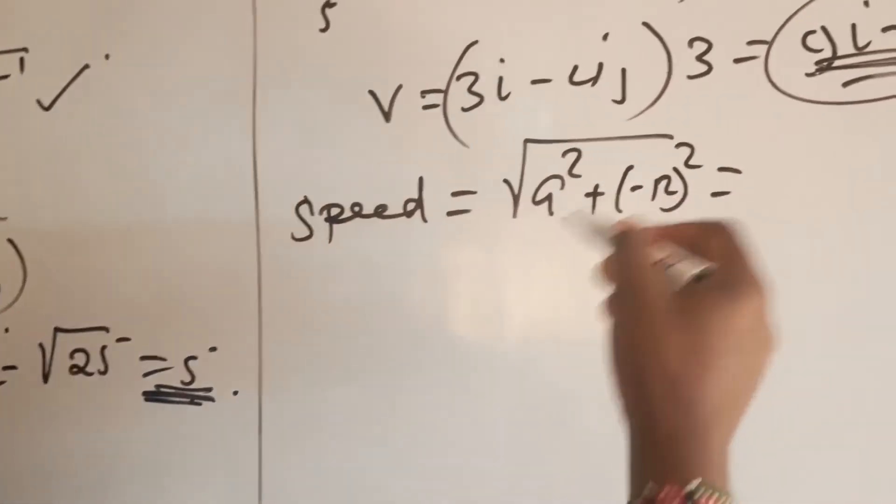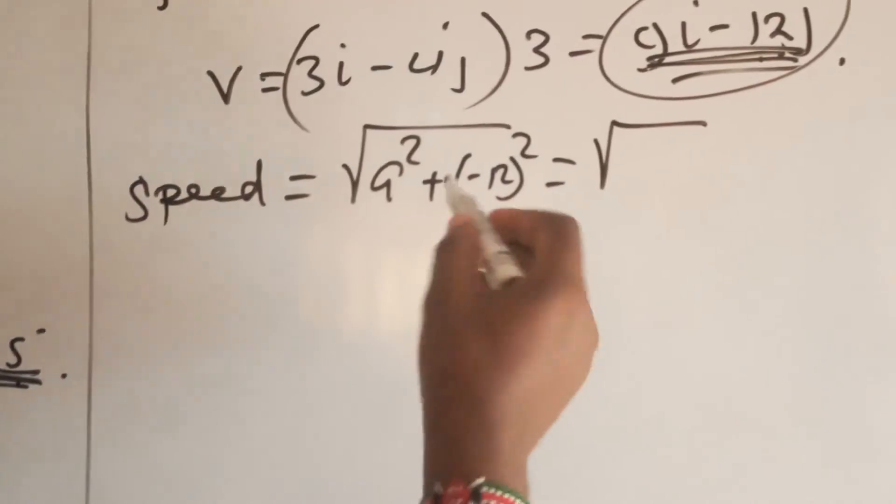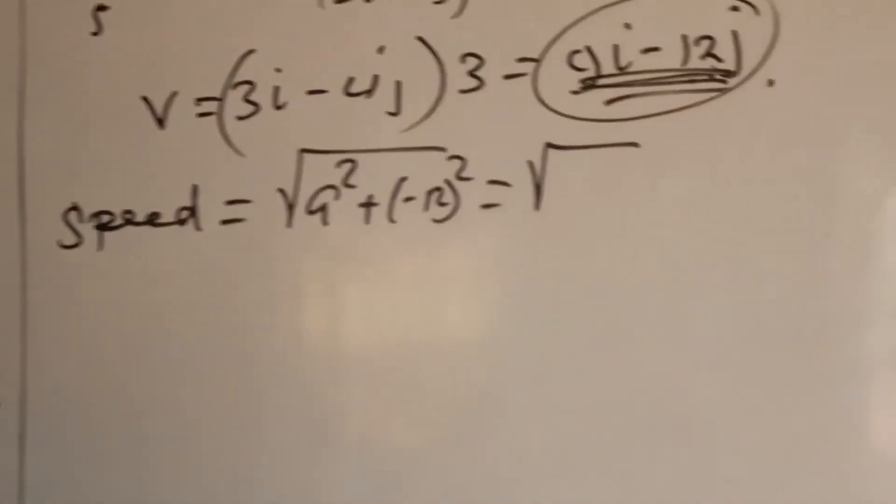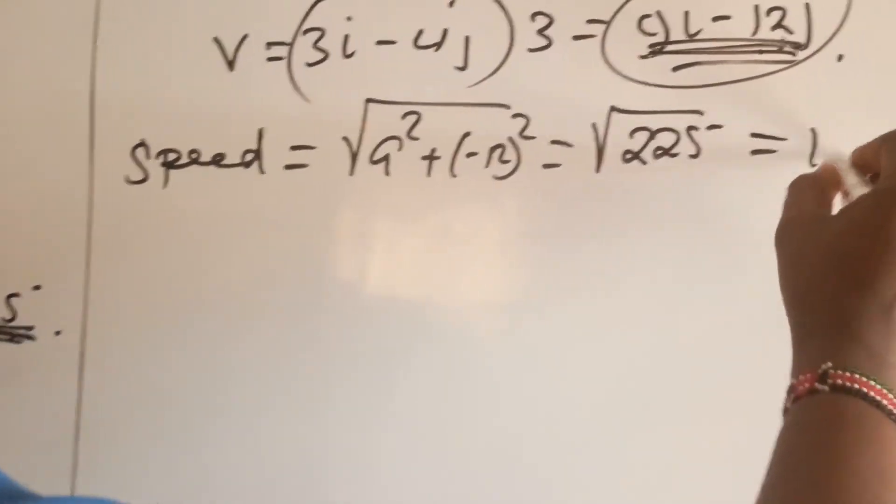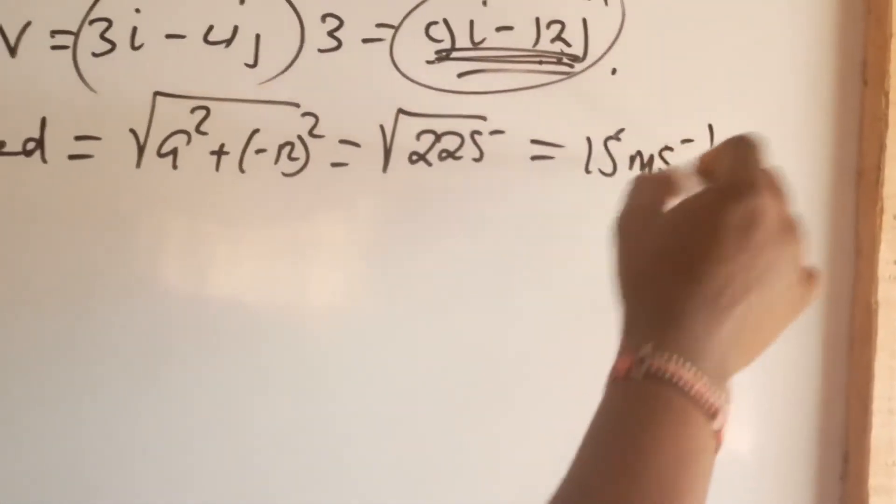Which is going to be the root of 9 squared plus minus 12 squared, which is the root of 81 plus 144, which is the root of 225, which is exactly 15 meters per second.